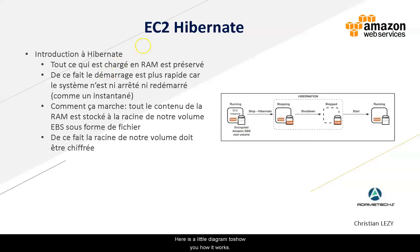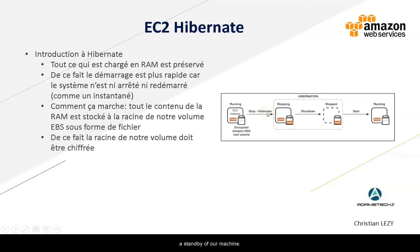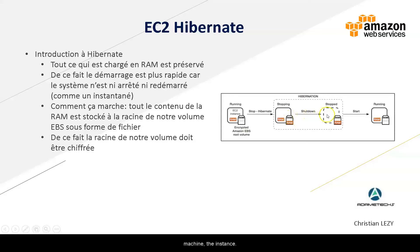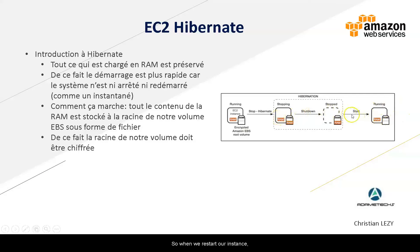Here is a little diagram to show you how it works. We have our EC2 instance here running with all the information loaded into its RAM and volume. We are going to do a Hibernate stop — a standby of our machine. The hibernation phase corresponds to our RAM backup at the root of our EBS volume and the shutdown of the instance. In fact, we stopped the instance but we do not stop the operating system. So when we restart our instance, the system will be up and the RAM will be reloaded from our EBS volume.